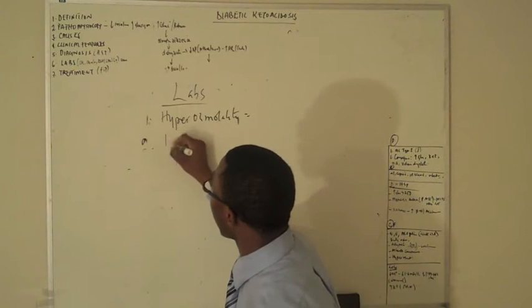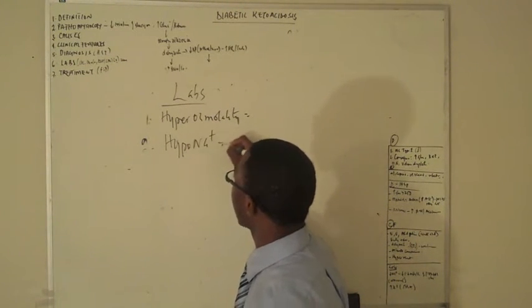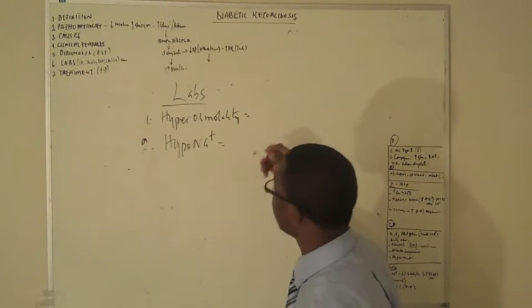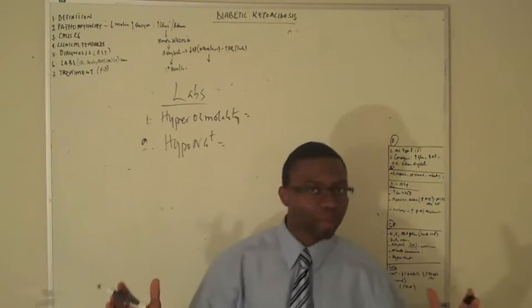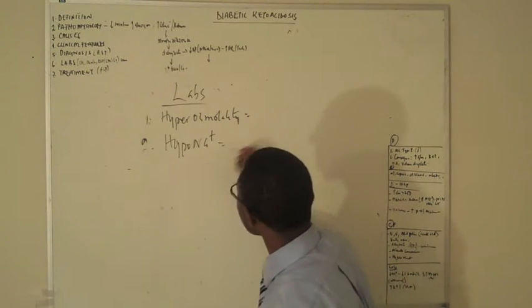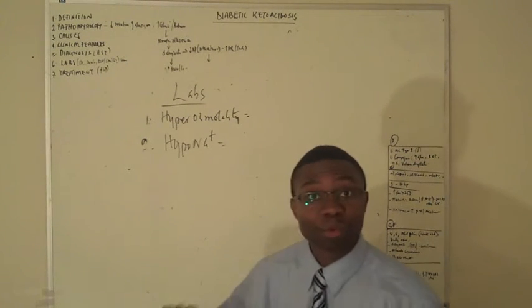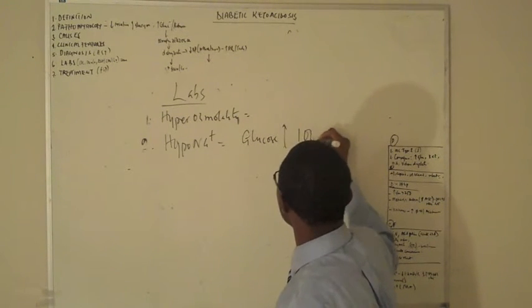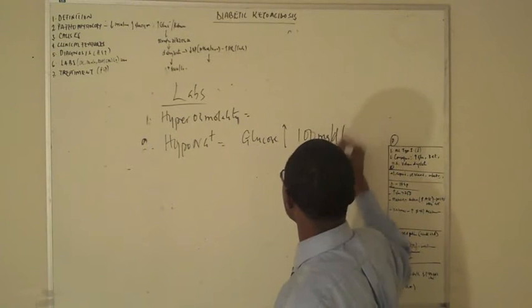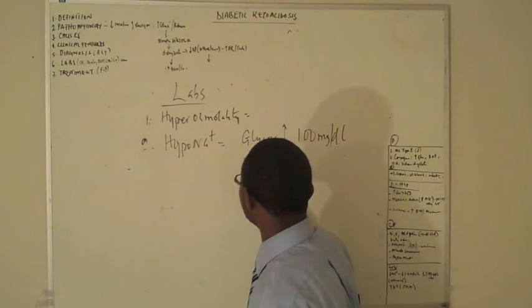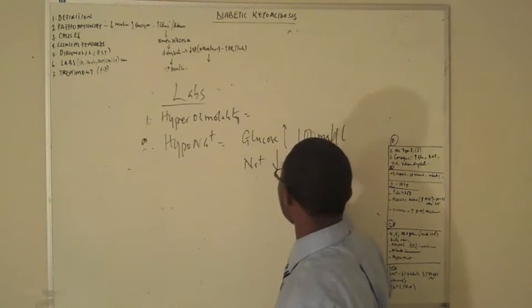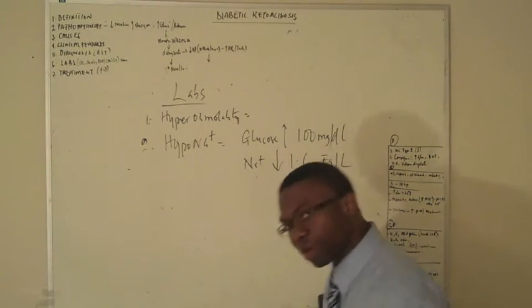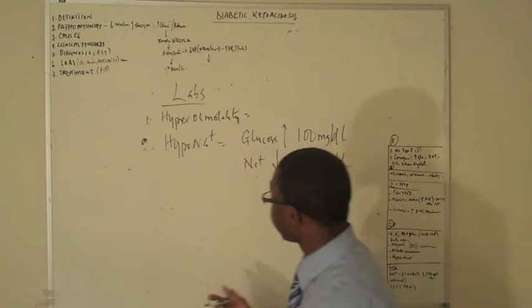Number two, hyponatremia. Let me explain why that happened. Hyponatremia occurs because somehow, every time your blood glucose goes up by 100 milligrams per deciliter, your sodium automatically drops by 1.6 milliequivalents per liter. Should we do a problem? Yeah, sure, why not?